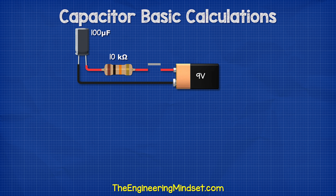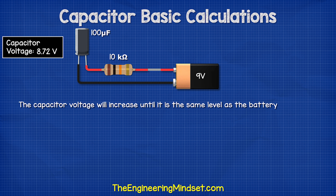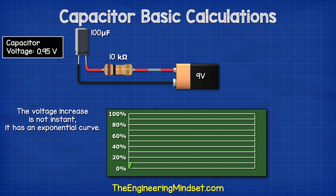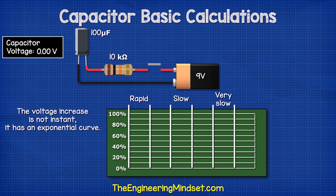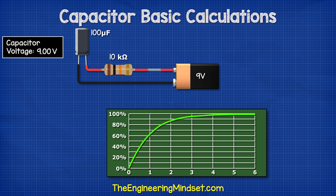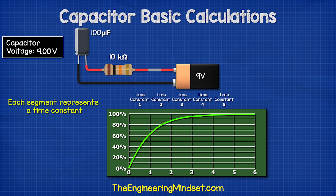Let's say we have a 9 volt battery, a 100 microfarad capacitor, a 10 kilohm resistor, and a switch, all in series. The capacitor is fully discharged and we read 0 volts across the two leads. When we close the switch, the capacitor will charge — the voltage will increase until it is the same level as the battery. The voltage increase is not instant; it will have an exponential curve. At first the voltage increases rapidly and then it slows down until it reaches the battery voltage. We split this curve into six segments, but we're only interested in the first five, because at the fifth marker we're basically at full voltage.